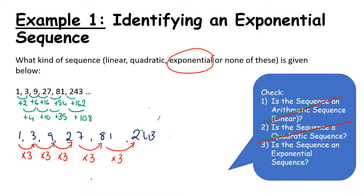To find the general term of this sequence, we take the common ratio of 3, giving t_n = 3^n. However, 3^1 = 3 but our first term is actually 1, so we adjust to t_n = 3^(n−1). This means t_1 = 3^(1−1) = 3^0 = 1, and recalling our rules of indices, anything to the power of 0 equals 1. The 3 remains our base — the common ratio.